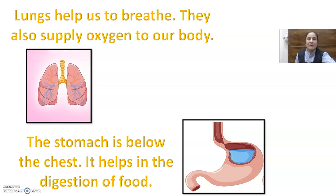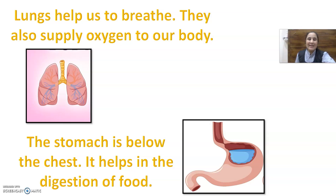Stomach, lungs, heart, brain — these internal organs help us to do many things and help us in many ways. Now, sense organs.